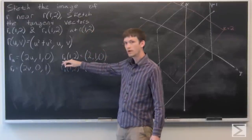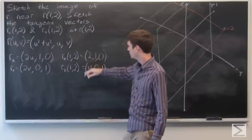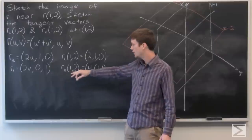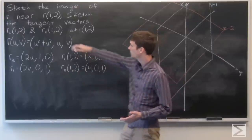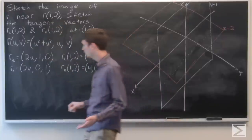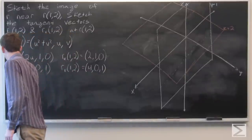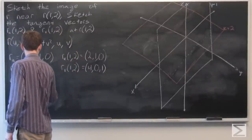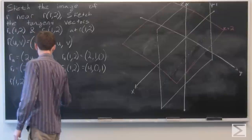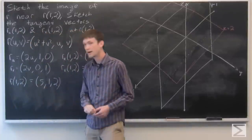So we get r_u at (1,2) is (2,1,0), and r_v at (1,2) is (4,0,1). And now we want to calculate what r(1,2) is. So that's (5,1,2).